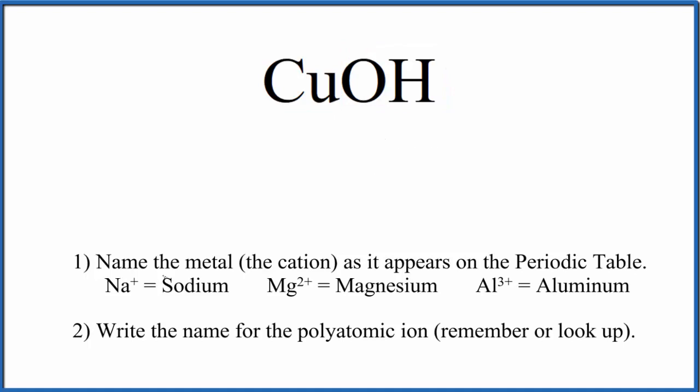First, we write the name of the metal as it appears on the periodic table, that's copper. Next, we write the name for the polyatomic ion, that's this OH. When you have OH bonded to a metal, it's called the hydroxide ion. So we have copper hydroxide right now as the name for CuOH.